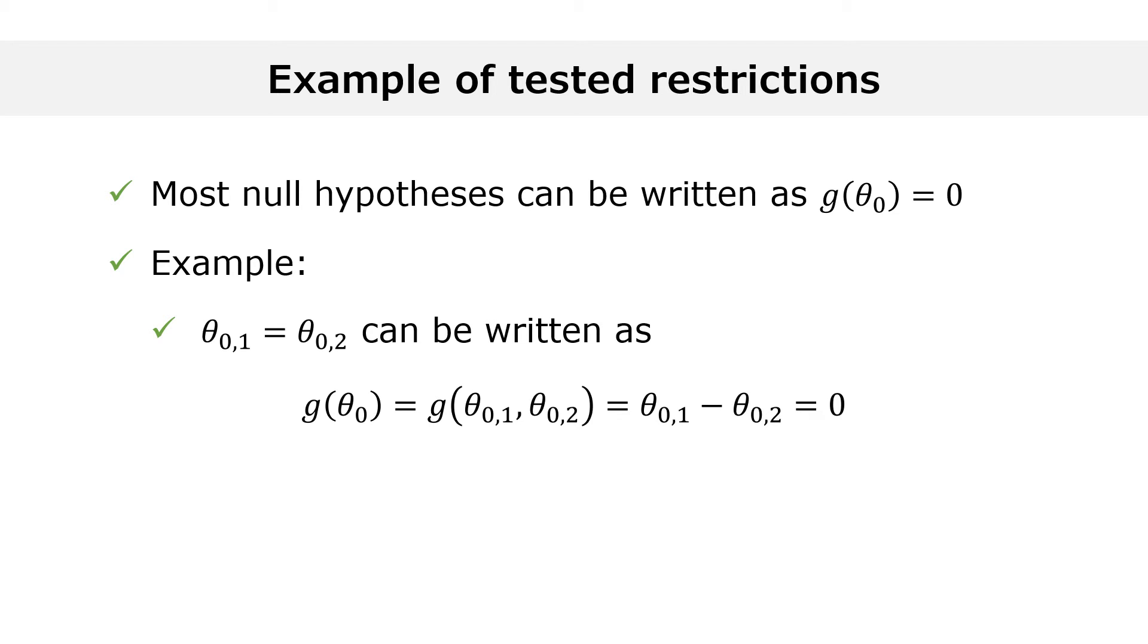In this case, g of theta zero is equal to theta zero one minus theta zero two. Now that we know how to write the null hypothesis, we need to learn how to compute the test statistic.